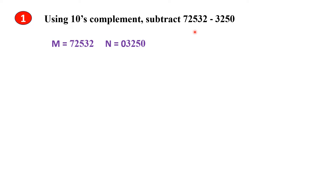Here M represents the first number, the minuend, and N represents the second number, the subtrahend. Both numbers must have the same number of digits, so I put a 0 in front of the second number.